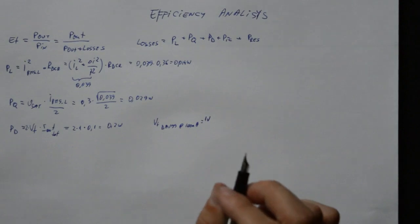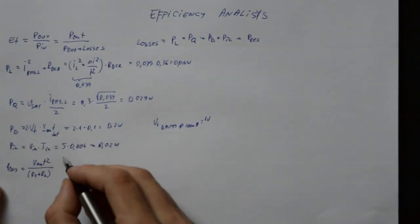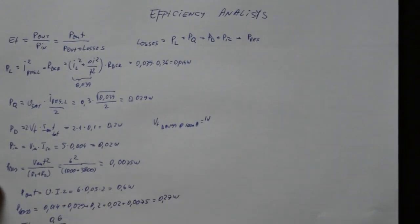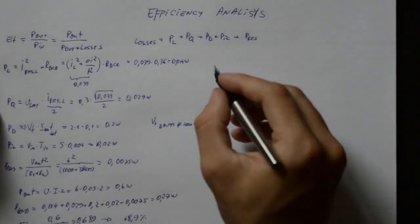we see that even if we neglect the switching losses, we still get a theoretical maximum of 69%, which is really close to the measured 66%. So, could this be improved?